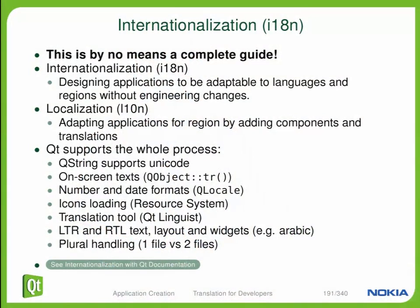Then later, the translator — who needs to know nothing about programming — can take those strings out of your application, translate them, and sort of pseudo-compile them into a binary blob. Qt also supports left-to-right layouts for both text and the application as a whole. So if you ran your application in Arabic, your widgets are actually going to flow right-to-left instead of left-to-right. Qt also has some very nice handling of plurals — you can say five files have been saved or one file has been saved. This is very important because handling of plurals varies quite a bit from language to language.